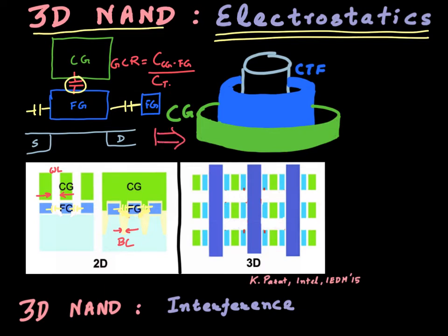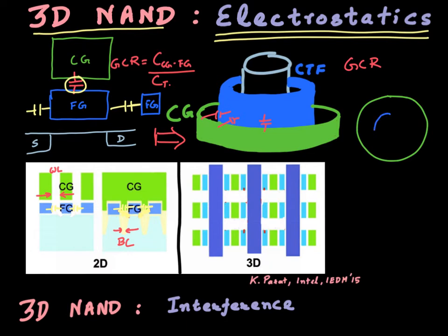As we move from 2D NAND to 3D NAND, there is a big jump in the gate coupling ratio because the control gate is now surrounding the charge trapping flash layer and is able to couple very effectively with it. People in the logic industry know that the best architecture for maximum coupling is the gate-all-around architecture, where the control gate surrounds the charge trap layer from all sides, resulting in maximum coupling between the control gate and the charge trap flash.